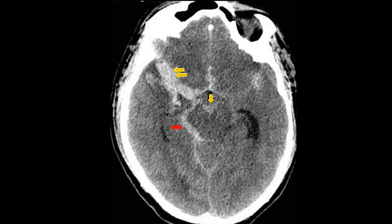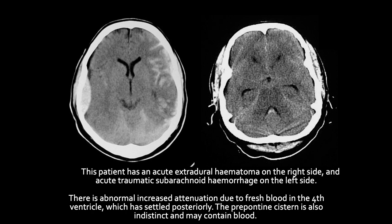In another case, blood is visible throughout the entire cistern system, with a large fluid collection in the middle cerebral artery region — confirming a grade 4 subarachnoid hemorrhage due to a ruptured aneurysm at the middle cerebral artery territory. Another patient shows a combination: an extradural hematoma on the right side and a subarachnoid hemorrhage on the left. When abnormal increased attenuation from fresh blood is seen only in the fourth ventricle with no other visible blood, this indicates a settling or old subarachnoid hemorrhage.